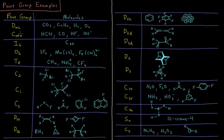C-infinity-V molecules would be those that don't have a mirror plane perpendicular to that C-infinity axis. Things like HCN, carbon monoxide, hydrogen fluoride, or a hydroxide anion.